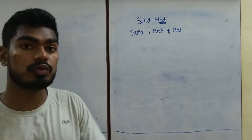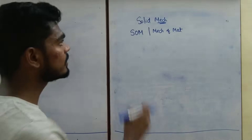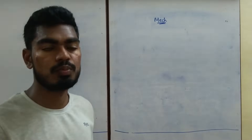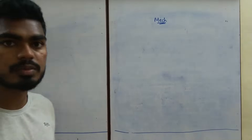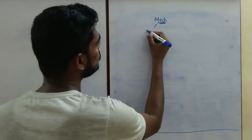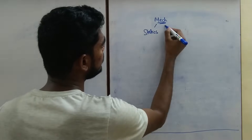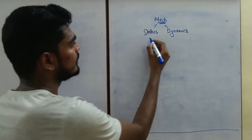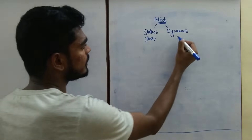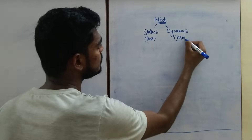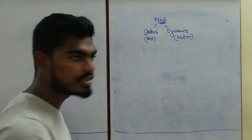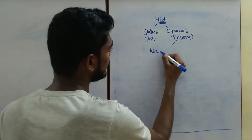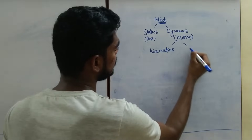Now, what exactly does Solid Mechanics consist of? You must already know that mechanics is the study of motion and the forces that are causing that motion. This can be subdivided into statics and dynamics. Statics is when the object is at rest — there is no motion. Dynamics is when the object is in motion. Within dynamics, we can further subdivide into kinematics and kinetics.